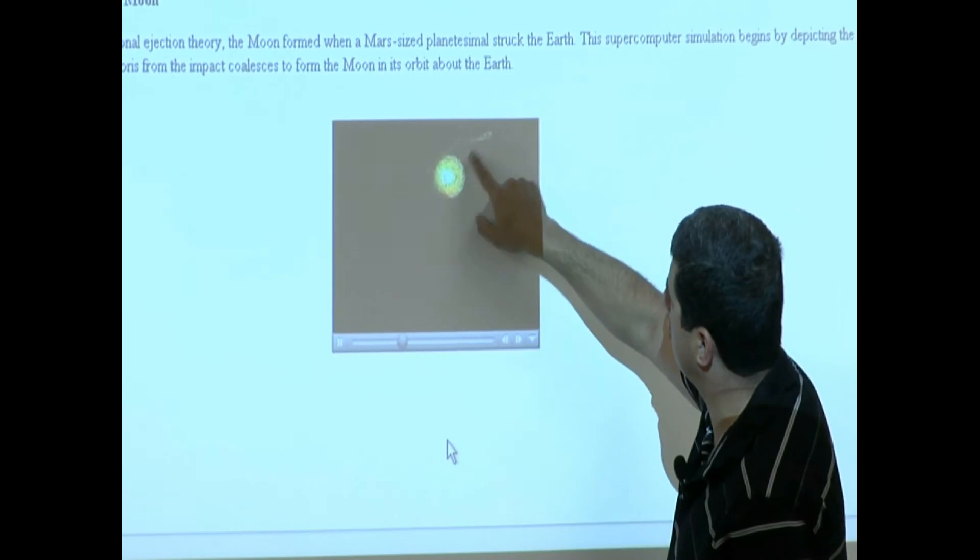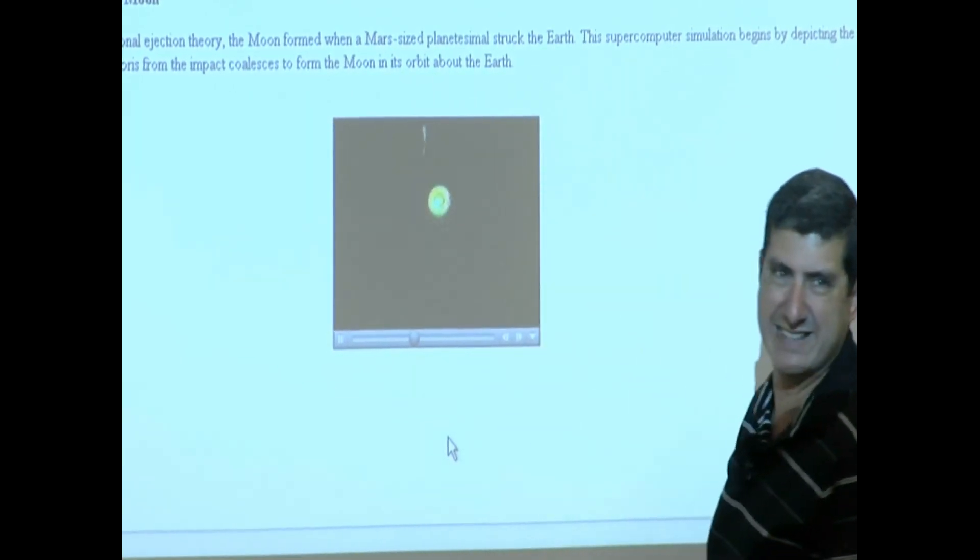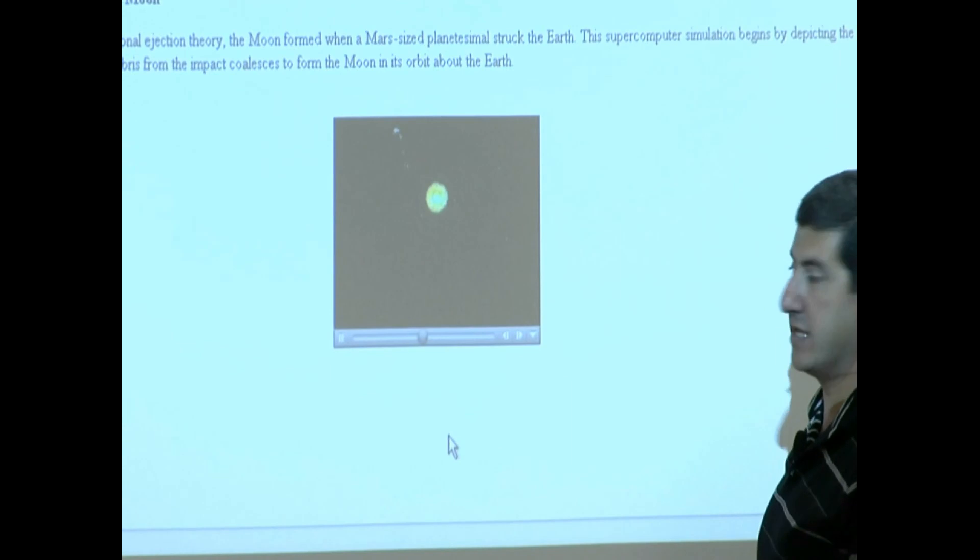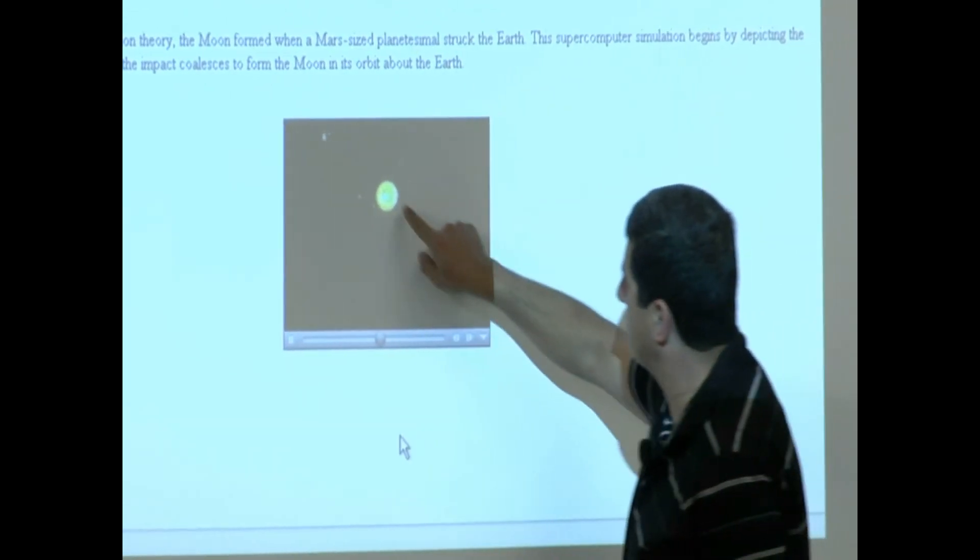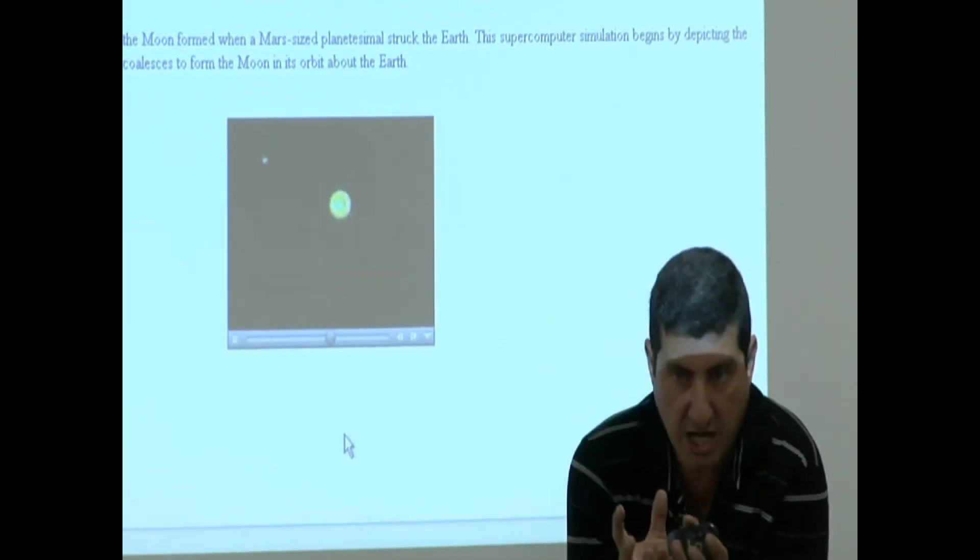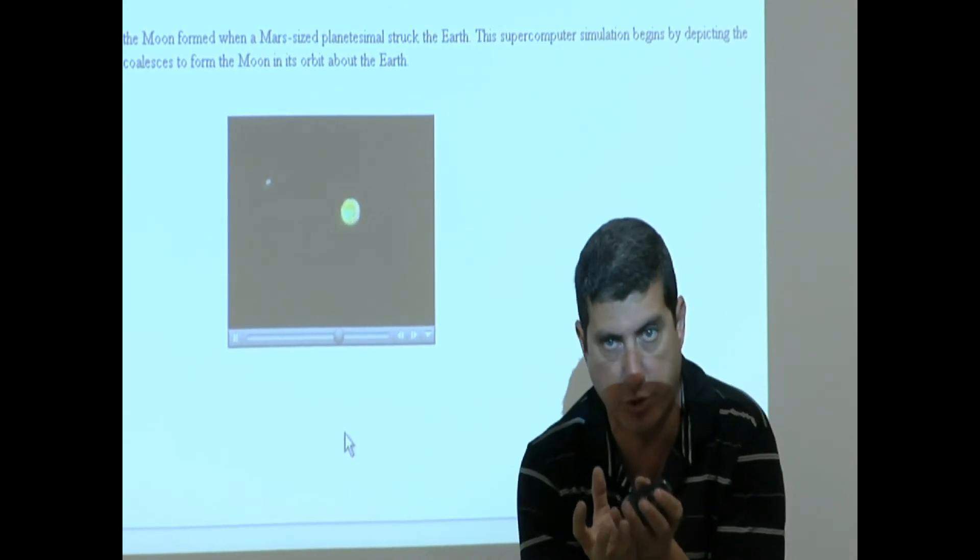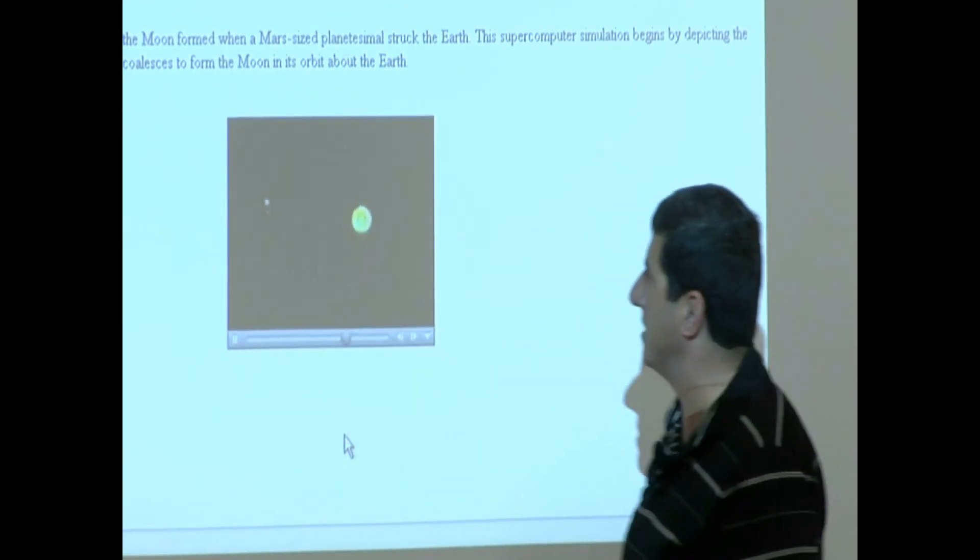You see? So according to this, this thing should only be rocky. And it is. The moon is only rocky. The interior of the Earth is unchanged, the iron part. And then finally, the moon forms.